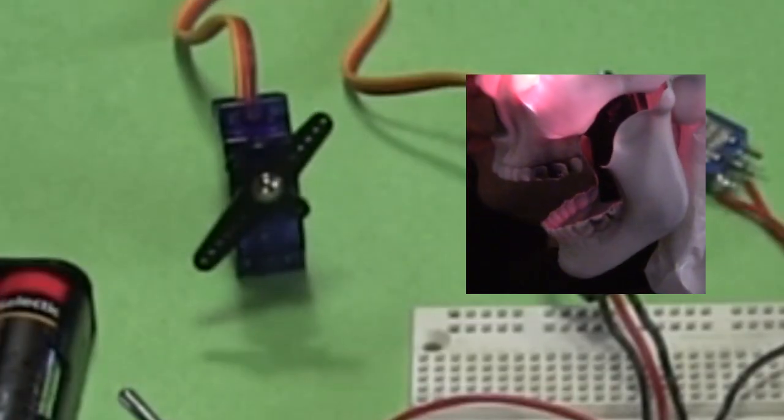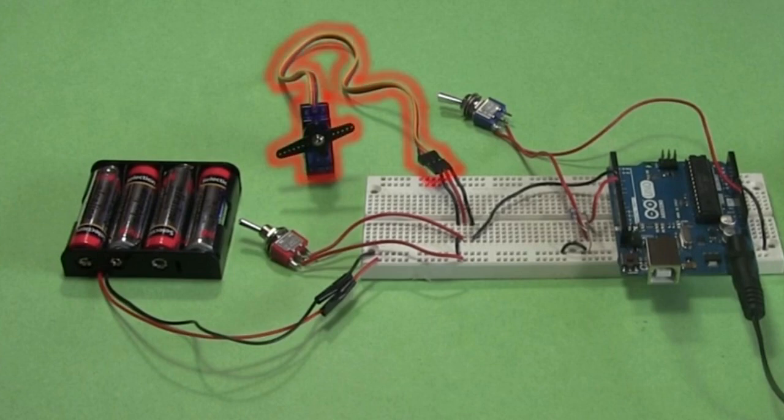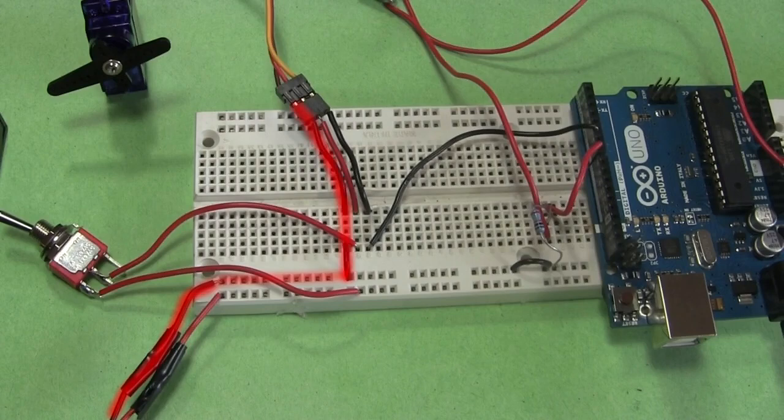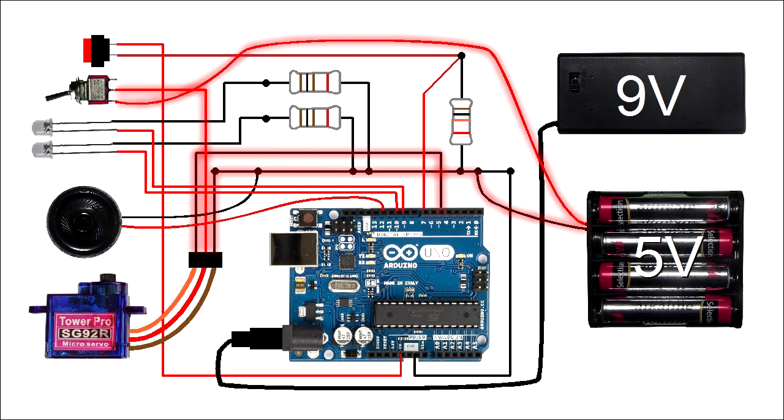The servo motor is for opening and closing the skull's jaw. That simply consists of the servo motor, around 5 volts of AA batteries to power it, a switch so I can disconnect the power to save the batteries, and all the wiring. The battery negative goes to the ground row, and from there to the servo's brown wire. The battery positive goes to this row, and from there through the switch to the servo's red wire. The servo's yellow wire goes to pin 5 on the Arduino so that the Arduino can control the servo.